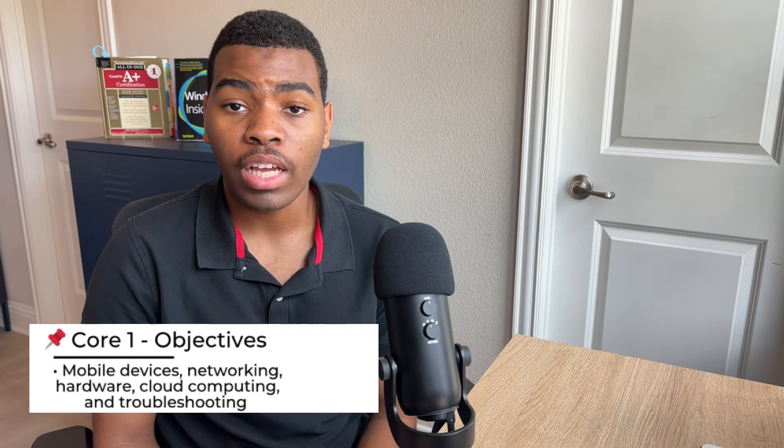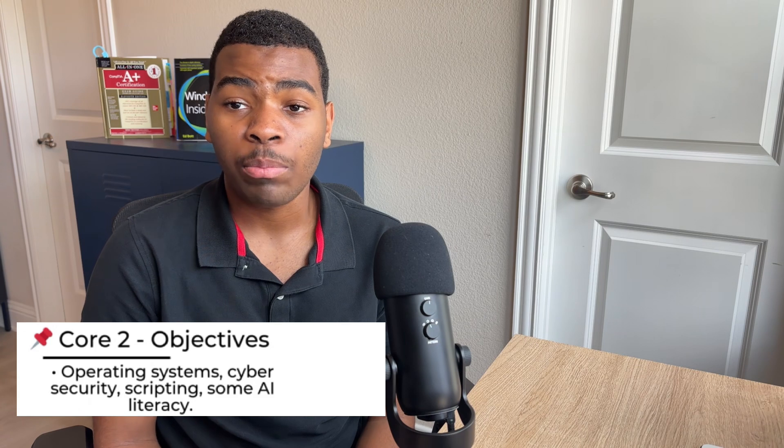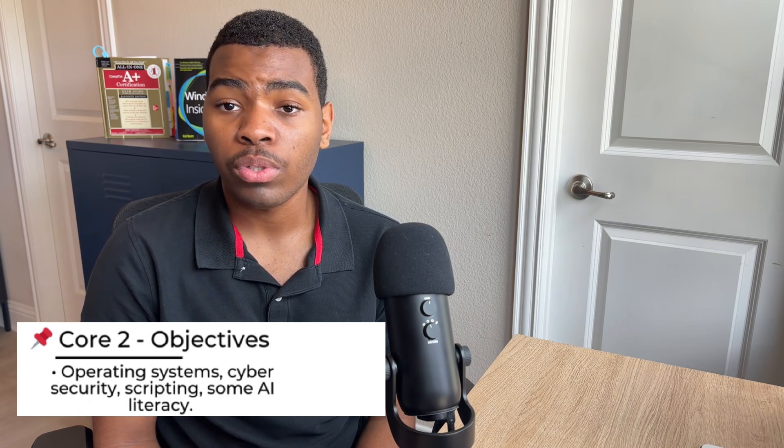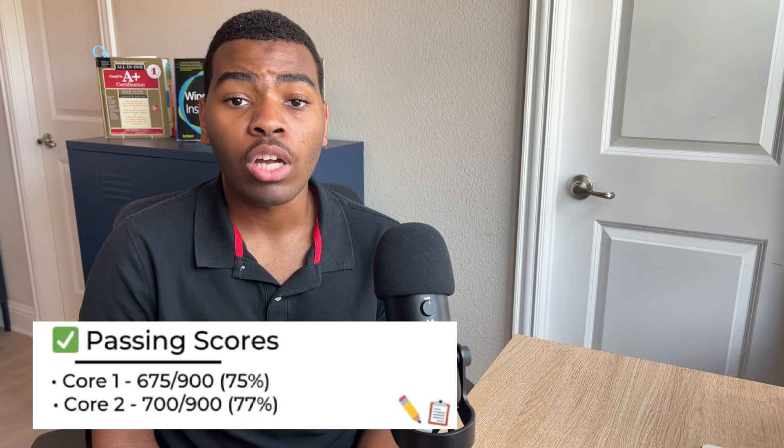The Core 1 exam covers mobile devices, networking, hardware, cloud computing, and troubleshooting. The Core 2 exam covers topics related to operating systems, cybersecurity, software troubleshooting, scripting, and even a little bit of AI literacy. I've attached both exam domains in the description. You need a minimum passing score of 675 out of 900 for the Core 1 exam, and 700 out of 900 for the Core 2 exam.